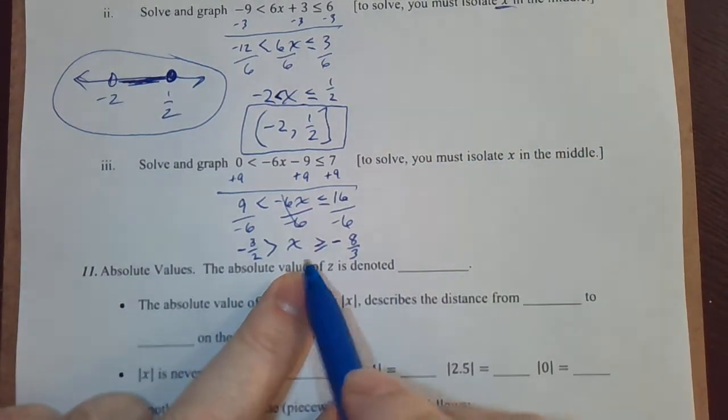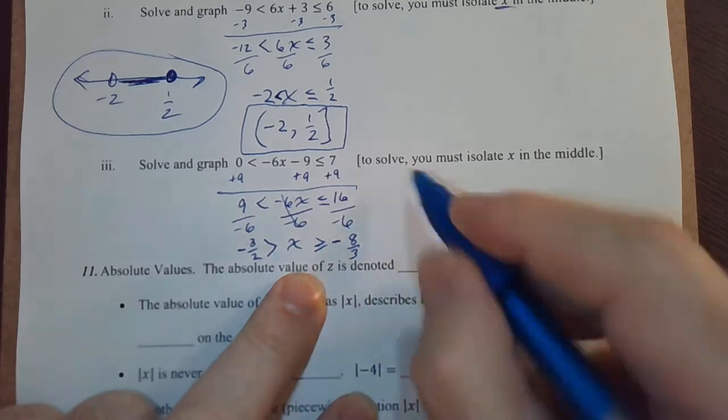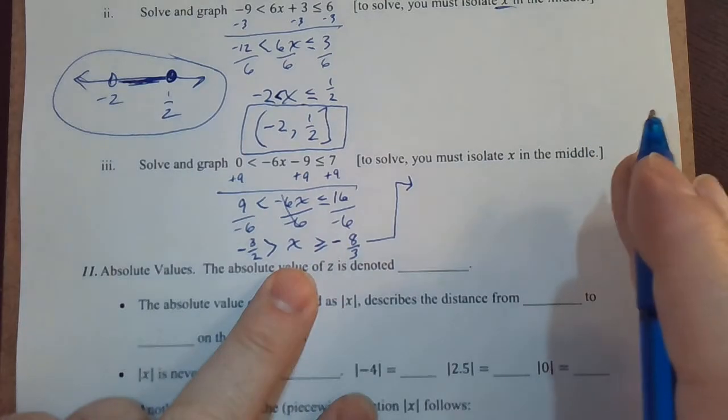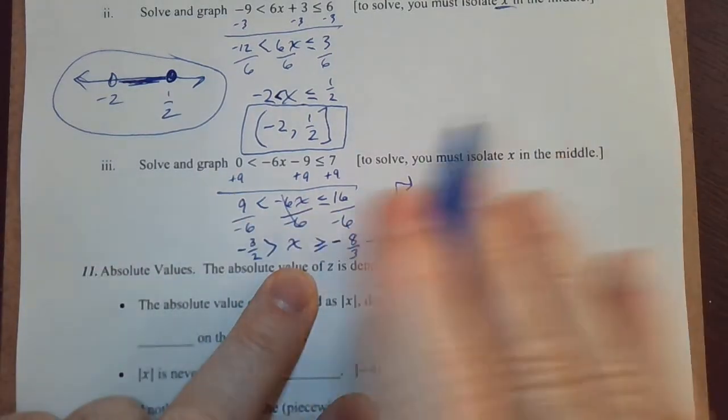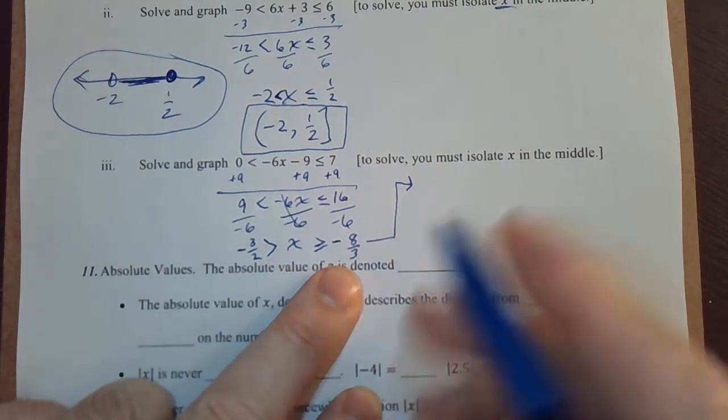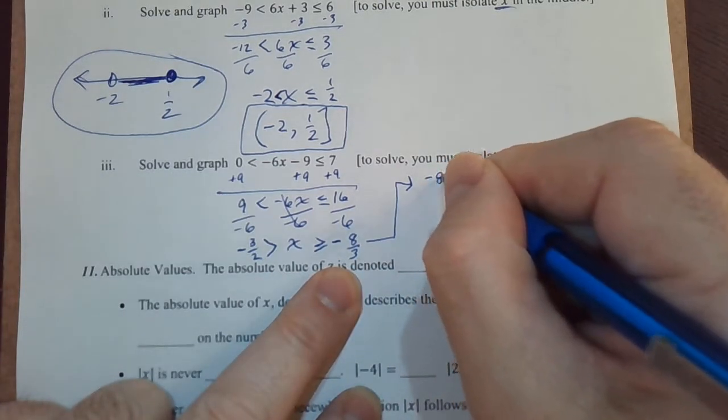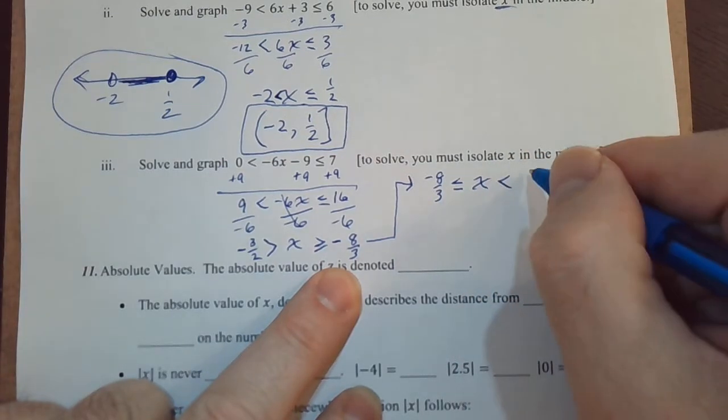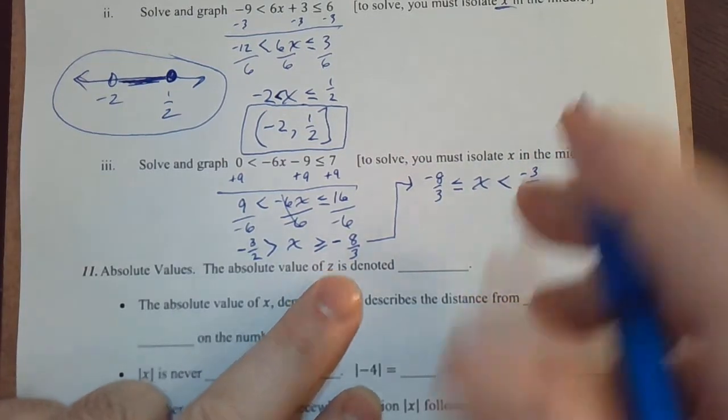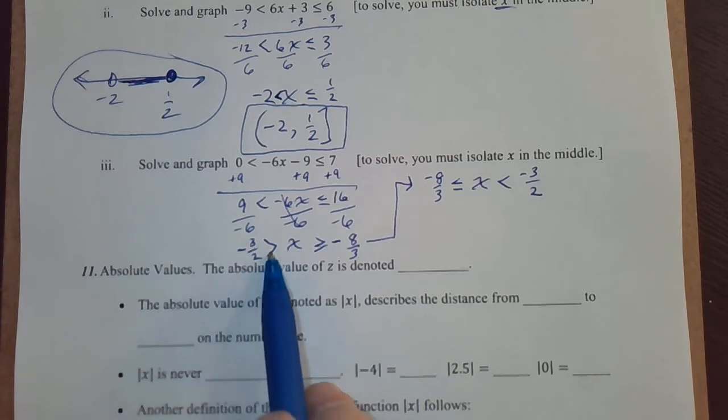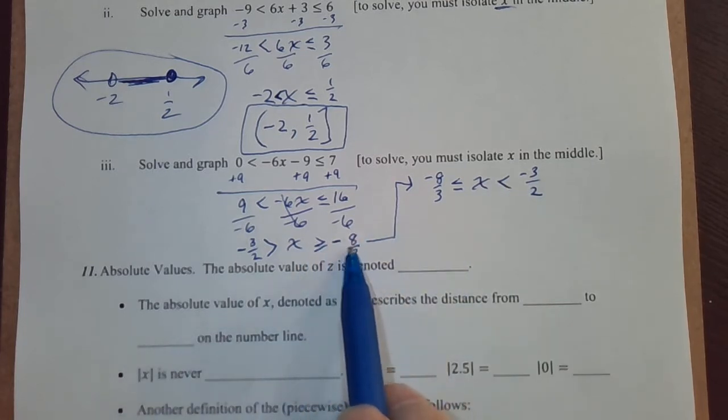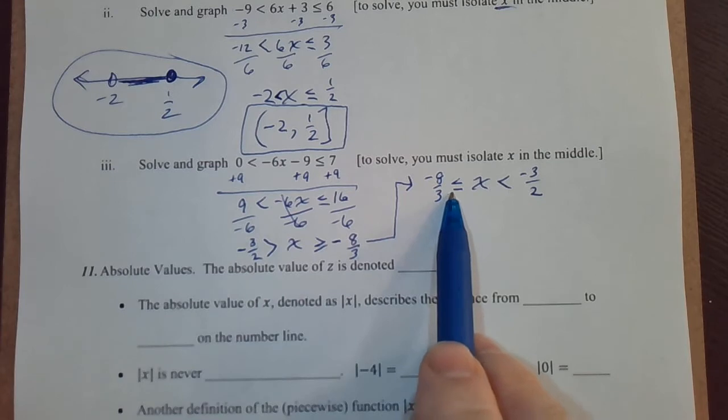Well, we cannot write the interval in this form. We need to rewrite it so we're dealing with less than's, not greater than's. So we need to flip it all the way around so that negative 8 thirds is on the left, less or equal x less than negative 3 over 2. You can just remember that on the negative 3 over 2, the symbol is pointing towards the x, just like it is over here. Between the x and the negative 8 over 3, it's pointing to the negative 8 over 3, just like it is over here.